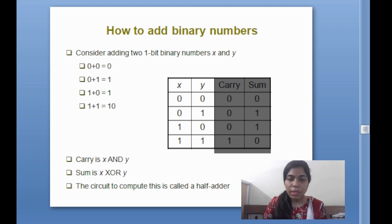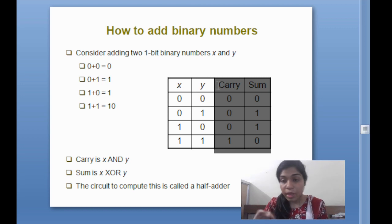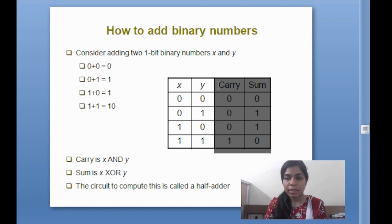In the binary number system, zero and one will be the input. X is the input, Y is the input, then output will be there. There are two outputs after the addition, and they are carry and sum.